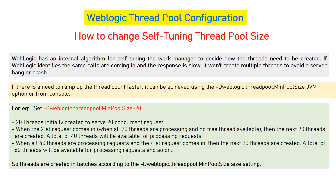You have the liberty to change the thread pool size — both minimum and maximum. To change the minimum pool size, you add a JVM parameter: -Dweblogic.threadpool.MinPoolSize. How it works: if you set the size to 20, then for each request beyond 20, it will assign the next 20 threads. For example, with initial threads at 20, when the 21st request comes, it assigns the next 20 making a total of 40; when the 41st request comes, it assigns another 20, making 60 total.